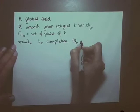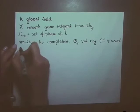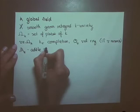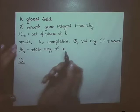O_v is only defined if v is non-Archimedean. And A_K will be the adele ring of K.